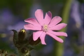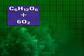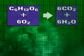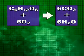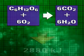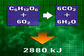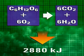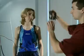Most plants and animals respire aerobically, which means they use oxygen. This combines with glucose to form carbon dioxide and water. But at the same time energy is released. It's this energy which allows plants and animals to move and grow.